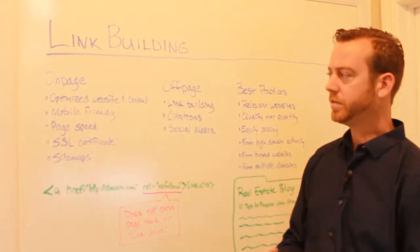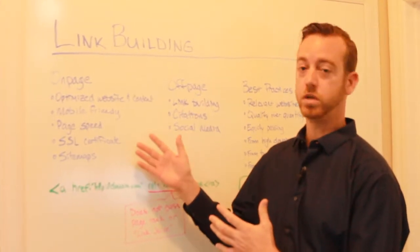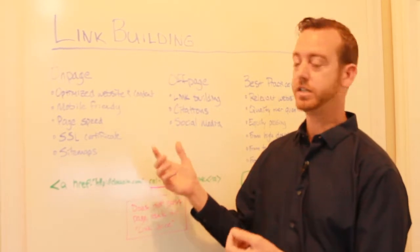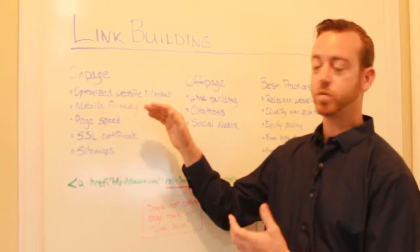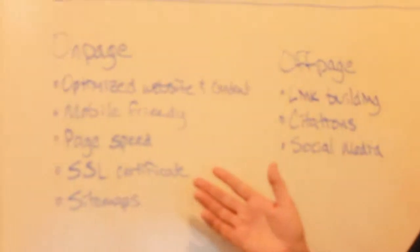What we can do oftentimes is do a lot of things to our website to get better rankings that we have control of, and that's oftentimes called on-page SEO strategies. You can do things like optimize your website and the content that's on it, make sure your website's mobile-friendly.